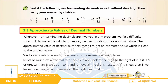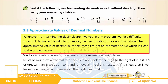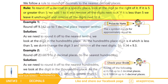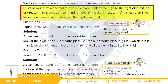ہمارا اگلا topic ہے 3.3 Approximate Values of Decimal Numbers, page 48۔ Non-recurring decimals کو solve کرنے میں بہت problem پیش کرنی پڑتی ہے، اسی لیے calculation کو آسان کرنے کے لیے ہم rounding off یا approximation کا process کرتے ہیں۔ Decimal کو ایک specific place تک round off کرنے کے لیے ہم اس number کے دائیں طرف والے digit کو دیکھتے ہیں۔